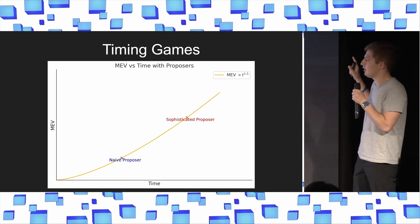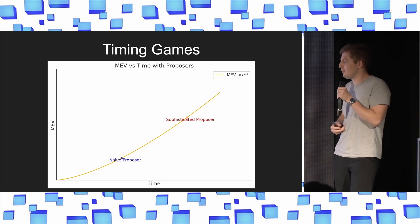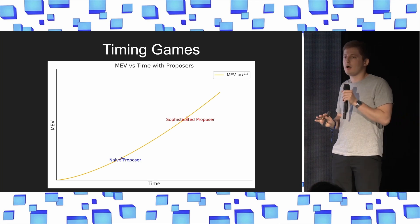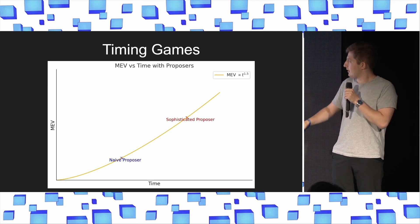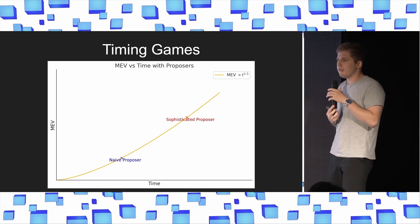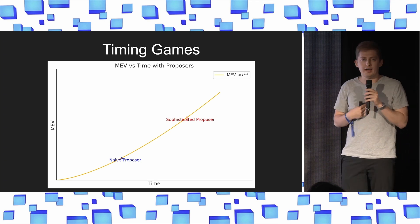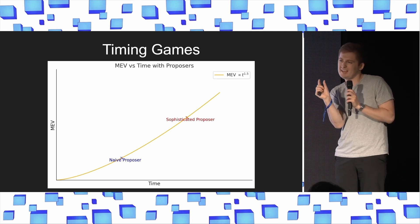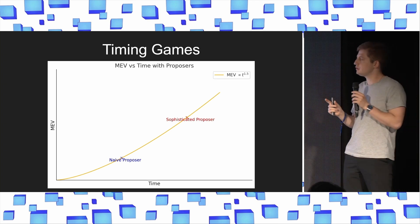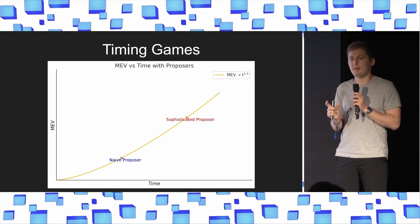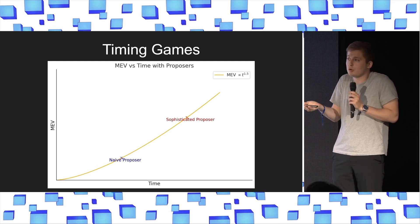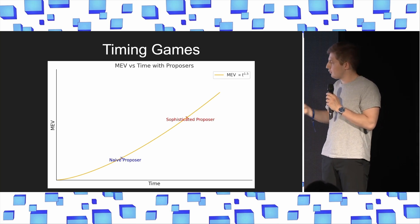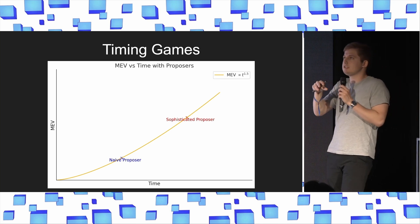Imagine you're a naive proposer: you have your execution payload, you send it out, and you earn some MEV. But if you're sophisticated, you realize that if you just wait a little bit longer to send out your block, you can earn more money — and it grows super-linearly. So there's this incredible game where you invest in better networking equipment, co-locate with the testers, and send out your block at the last second, earning a little bit more. There's a Tim Roughgarden paper showing that these minor deltas in average APY create a centralization vector: the winners earn more consistently, bid higher, and eventually centralize.